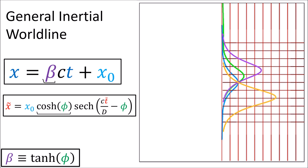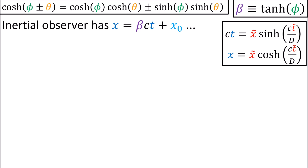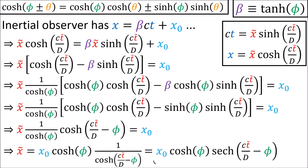If we define beta as being the hyperbolic tangent of a hyperbolic angle phi, and using a known hyperbolic trig identity, it's possible to prove this. You can pause the video if you want to study this proof.